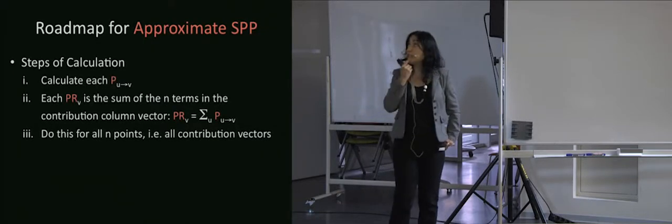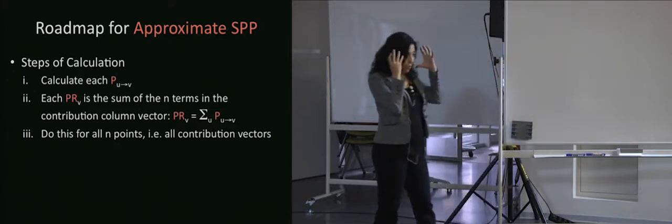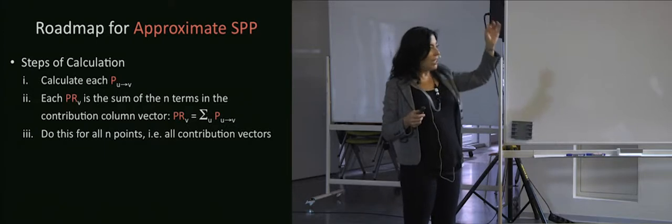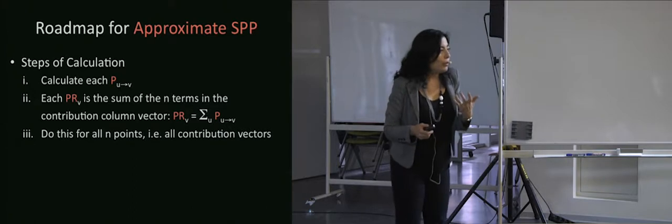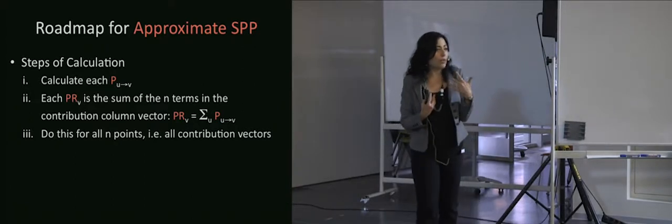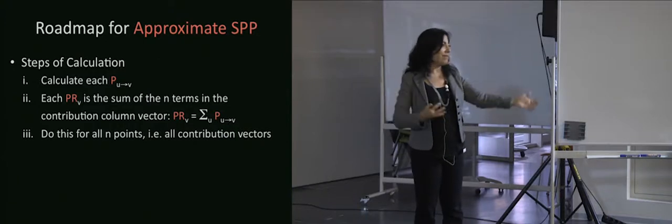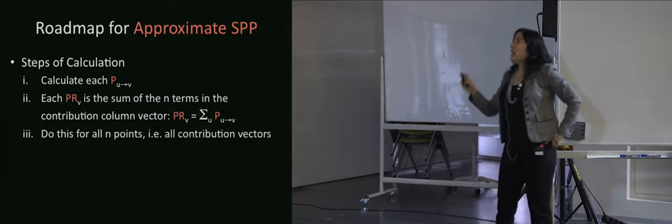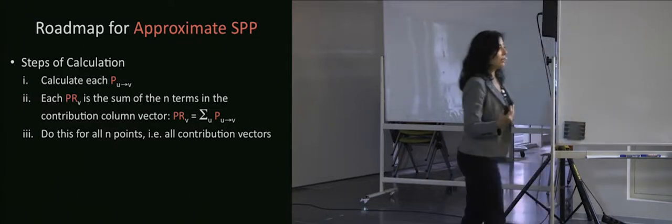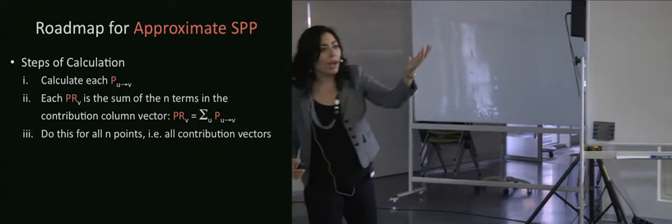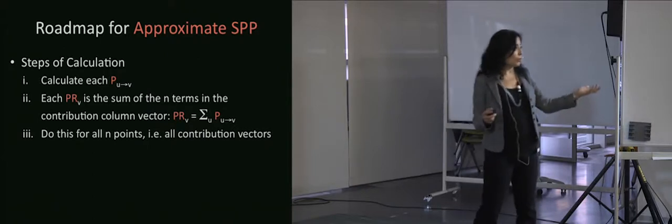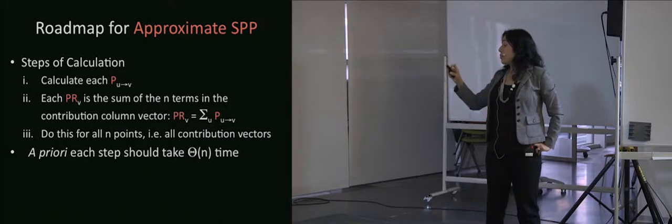The roadmap: if I want to think about it in steps, I calculate each entry P_{U→V} — the contribution to website V from website U. Then each PageRank is the sum of n terms: my PageRank equals the sum of your contributions. Finally, I want to do this for all contribution vectors. A priori, each step should take order-n time. So how do I calculate P_{UV}? Previous work by Jeh and Widom achieved order log n per entry; Anderson, Chung et al. improved this to remove the log.